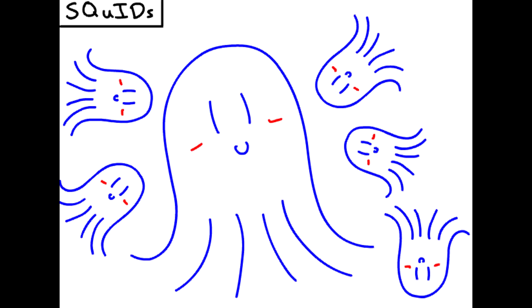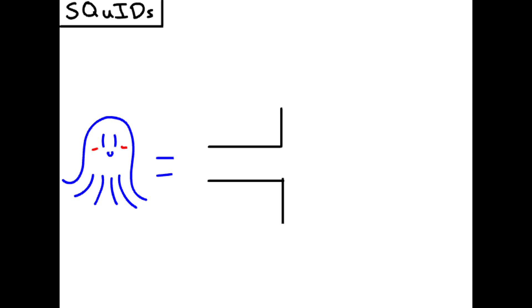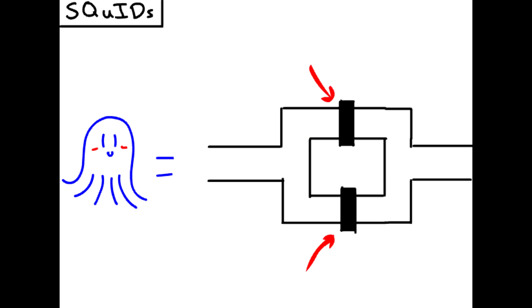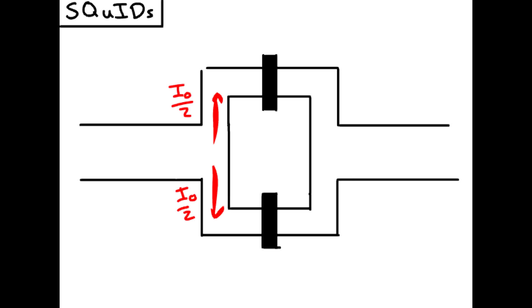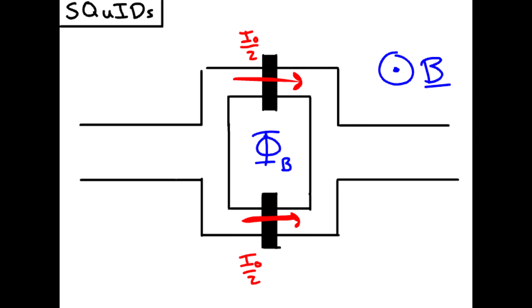We're finally ready to talk about squids. A squid is composed of a single wire that's split into two and then rejoined to form a loop. Each side of the loop is fitted with the Josephson junction and the current is passed along the system. Normally, the current would split across both branches equally, but if we introduce an external magnetic field that threads the hole, it will form a screening current based on the magnetic field.